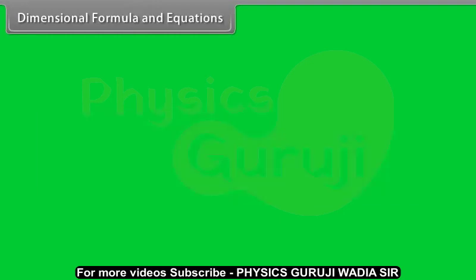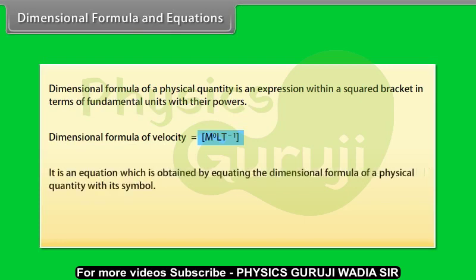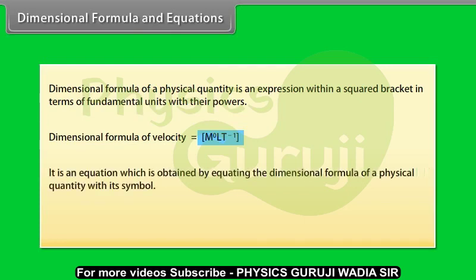Dimensional formula and equations: Dimensional formula of a physical quantity is an expression within a squared bracket in terms of fundamental units with their powers. Let us take an example: Dimensional formula of velocity equals under brackets M to the power zero L T to the power minus one.